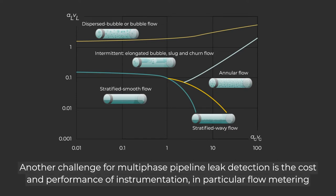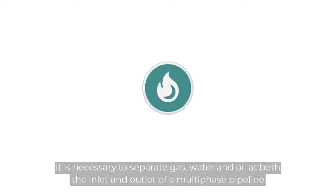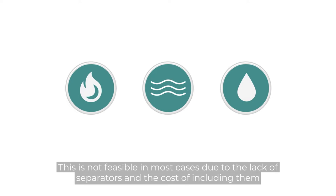Another challenge for multi-phase pipeline leak detection is the cost and performance of instrumentation, in particular flow metering. To achieve a similar level of accuracy as a gas or liquid pipeline, it is necessary to separate gas, water, and oil at both ends. This is not feasible in most cases due to the lack of separators and the cost of including them.